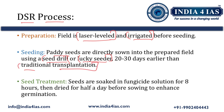In the traditional transplantation method, seeds are sown in nurseries for 25 to 35 days, then the seedlings are transplanted. Whereas in DSR, seeds are sown 20 to 30 days earlier than the traditional transplantation method. For seed treatment, seeds are soaked in a fungicide solution for 8 hours, then dried for half a day before sowing to enhance germination. The fungicide prevents fungal attacks on the seeds.